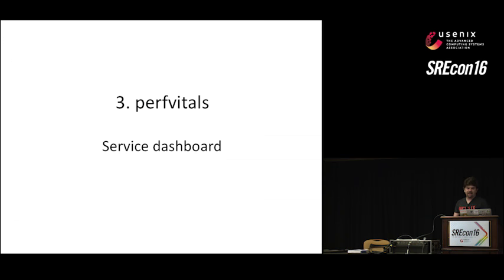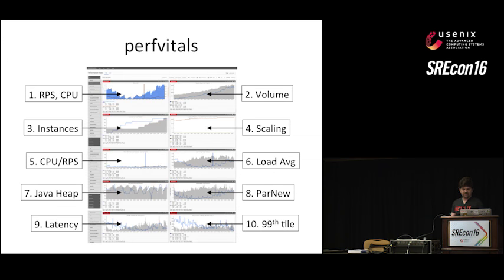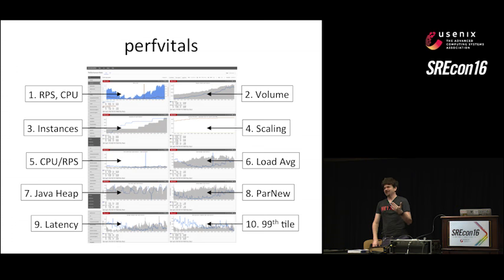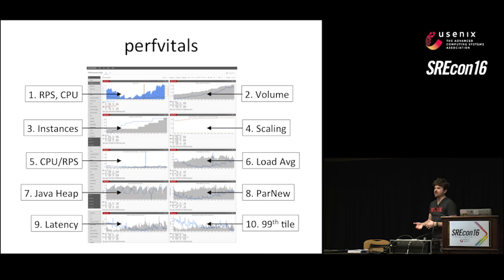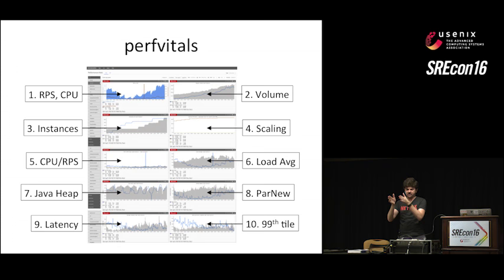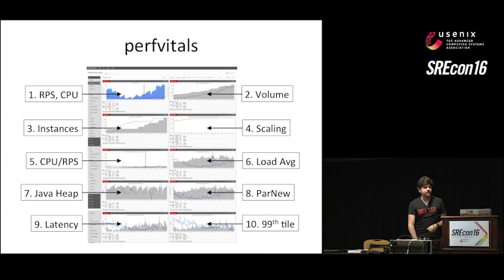Perf vitals is a per-service dashboard with various key performance metrics. We have things like requests per second and CPU plotted, traffic volume going to that service, number of instances and how scaling is working, a cycles-per-request metric — which is interesting because if that changes it's a clue something bad is happening — load averages, Java heap, and 99th percentile latency. Standard system and application metrics. I'm showing you the sequence: initial investigation, PRE-triage checklist, PRE-triage dashboard, Mogul perf vitals, as we drill down through an issue to find the cause.